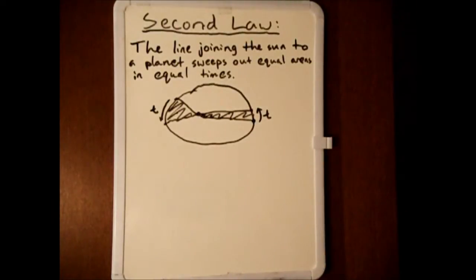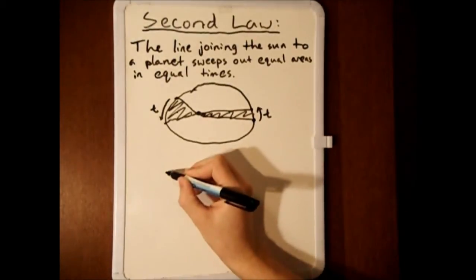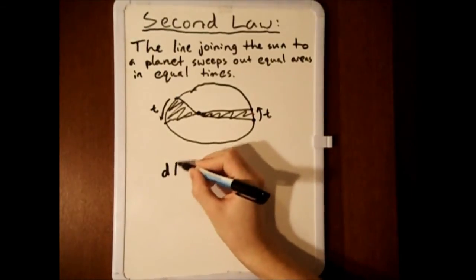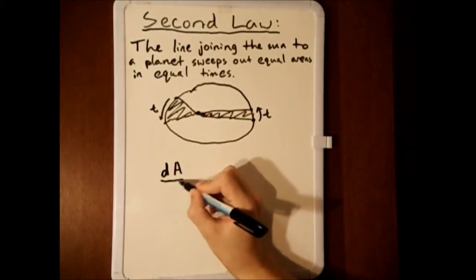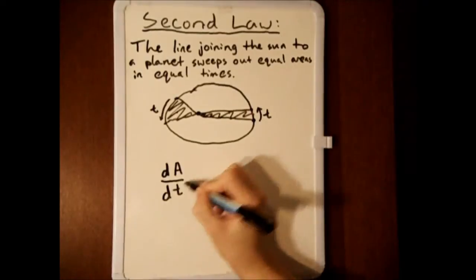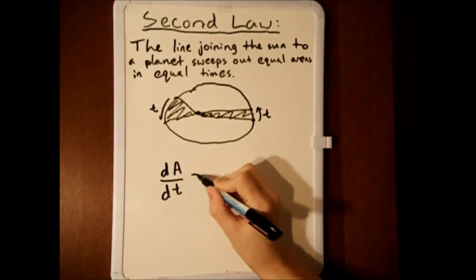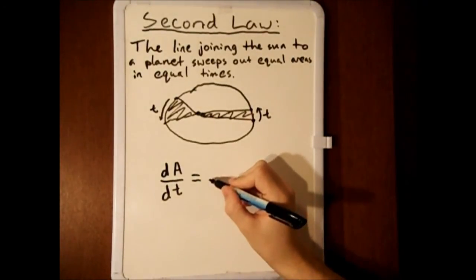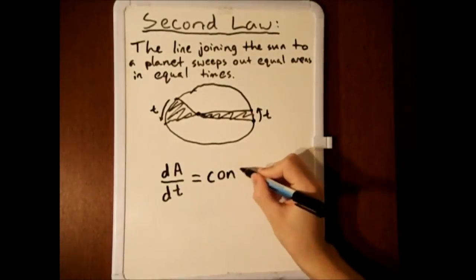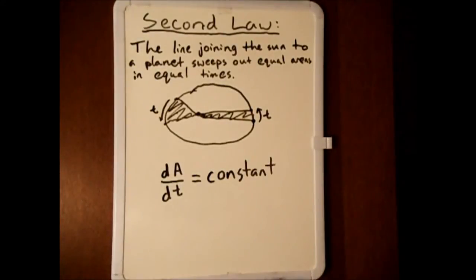The easiest way to show that this is true is by showing that the derivative of the area swept out by the line with respect to time is constant at all times t. If we can show this, then that will prove Kepler's second law.